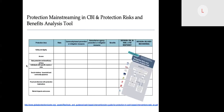This slide represents the CBI and protection risk and benefit analysis tool. It's a matrix with protection areas noted in the left-hand column: safety and dignity, access, data protection and beneficiary privacy, individuals with specific needs, social relations, fraud, and market impacts and access. These areas are typically defined when thinking about protection risk but are not fixed and can be adapted depending on context.